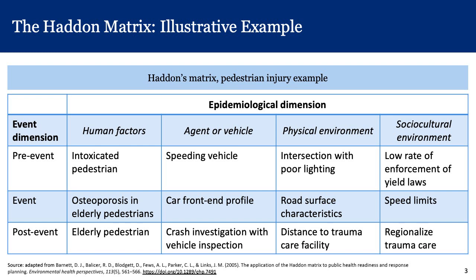Still on the pre-event row, before the moment of impact, the agent or vehicle factor could be a speeding vehicle. A physical environmental factor could be an intersection with poor lighting. And a sociocultural pre-event factor could be a low rate of enforcement of yield laws.